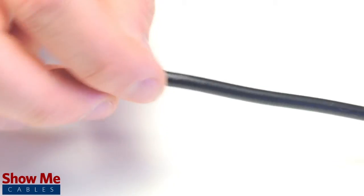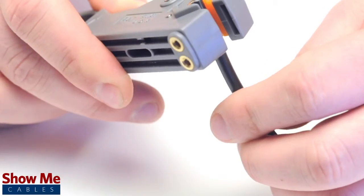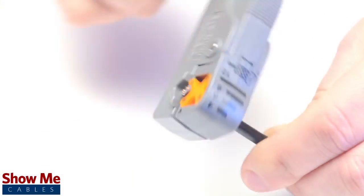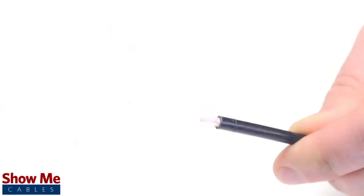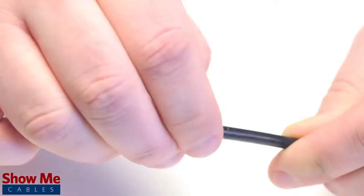Start by inserting the ferrule over the outer jacket of the cable. Then using your cable stripper, strip back the outer jacket and dielectric. The advantage of using a cable stripper is that it will strip back the jacket and dielectric at the same time.